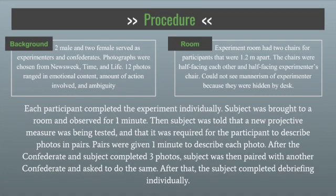For the procedure, they had two male and two female who served as experimenters and confederates, and that changed throughout. They also had 12 images from different magazines that ranged from different subjects, whether emotional or ambiguous. In the room, they had two chairs that were 1.2 meters apart, and they were half facing the confederate and half facing the experimenter.